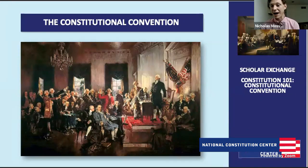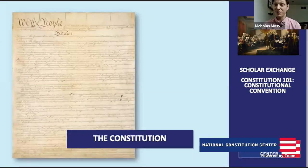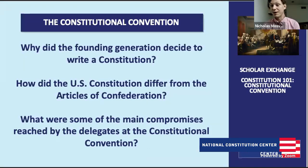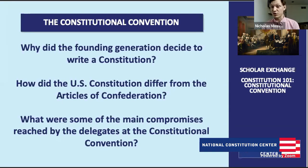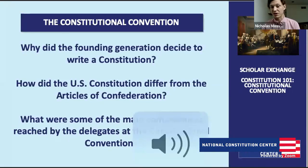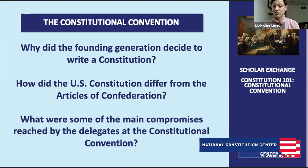Why have a Constitutional Convention? That ties into the question: what are the Articles of Confederation? The Articles of Confederation are the first constitution. The Declaration of Independence was 1776; after that, states began writing their own constitutions. The Articles were drafted in 1777, although not actually ratified until 1781. The Articles was the first constitution the Continental Congress operated under during the Revolutionary War and thereafter. Its significance is that it left a lot of power to the states with very little for the central government.